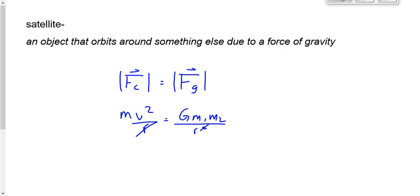Now, looking at the masses — the m on the left side of the centripetal force: what mass is that? If the International Space Station is orbiting the Earth, the m in mv²/r is the mass of the thing doing the orbiting — the mass of the satellite, which we'll call ms.